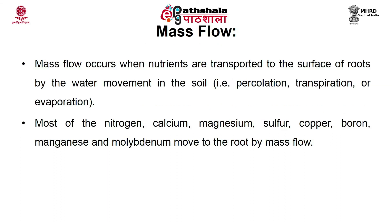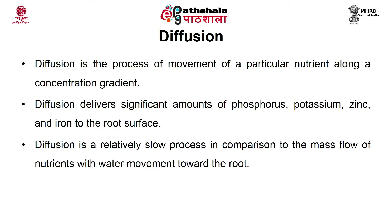Mass flow occurs when nutrients are transported to the surface of root by water movement. Most of the nitrogen, calcium, magnesium, sulfur, copper, boron, manganese and molybdenum move to the root by mass flow. Diffusion is the process of movement of a particular nutrient along a concentration gradient. When there is a difference in the concentration of a nutrient within the soil solution, the nutrient will move from an area of higher to lower concentration, until it is uniformly distributed. Diffusion delivers significant amounts of phosphorus, potassium, zinc and iron to the root surface. Diffusion is a relatively slow process in comparison to the mass flow of nutrients with water movement towards the root.